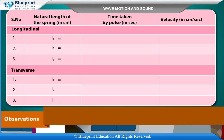Observations: Record the natural length of the spring in centimeters, time taken by the pulse in seconds, and velocity in centimeters per second — for both longitudinal and transverse pulses. Take readings L1, L2, and L3 for each type.